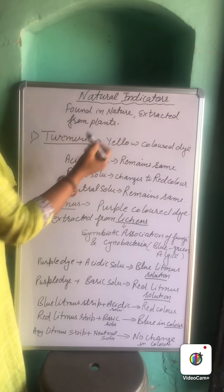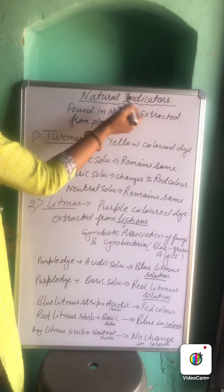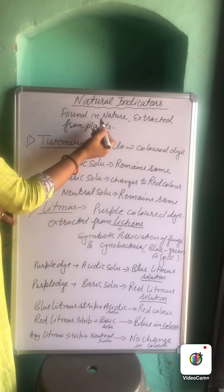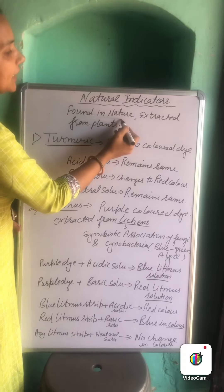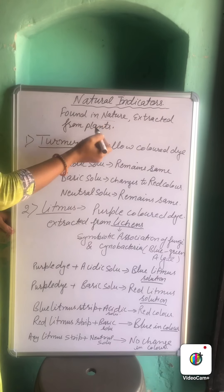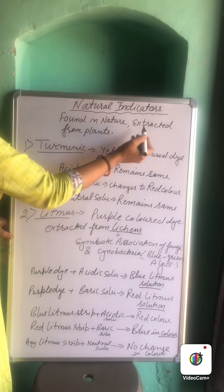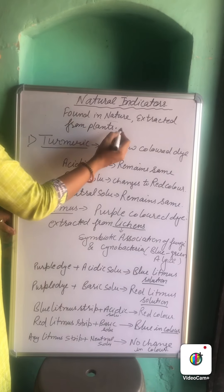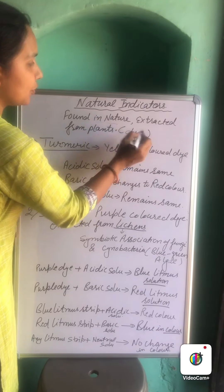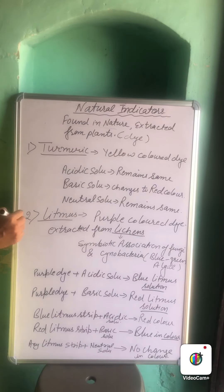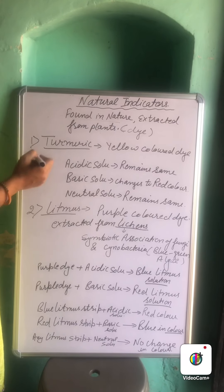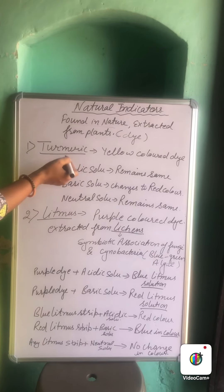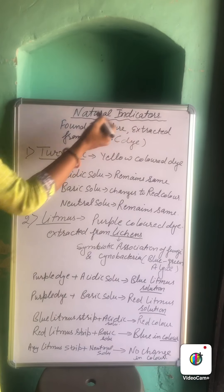Now we will explain the types of indicators in detail. Natural indicators are those which are found in nature and extracted from plants.